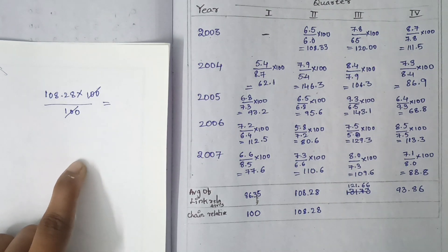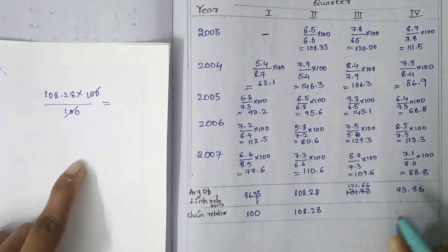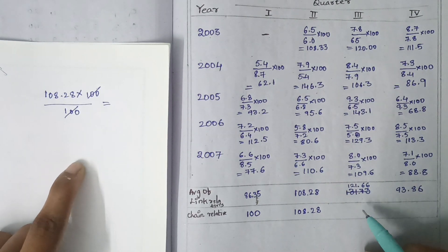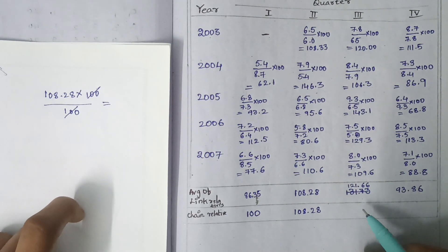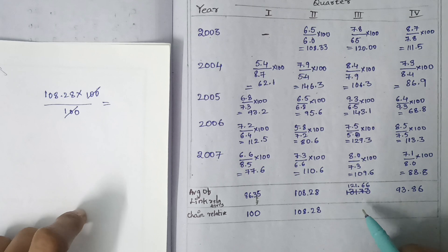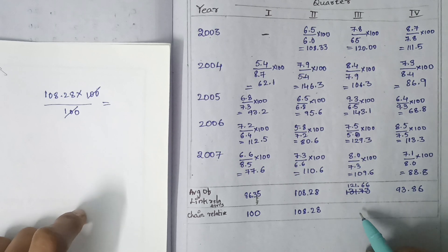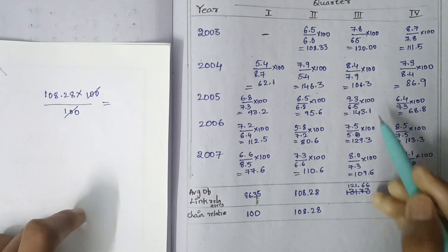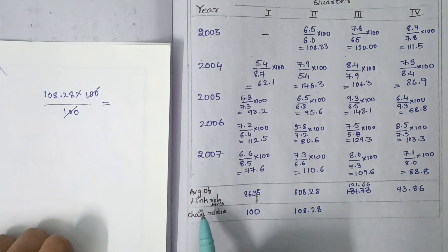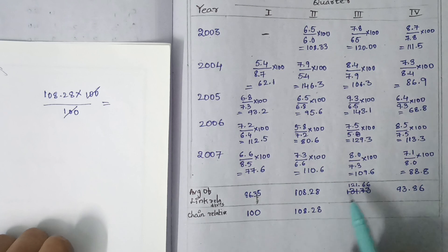Next, for the third period, we use the same formula: the average link relative of that period.